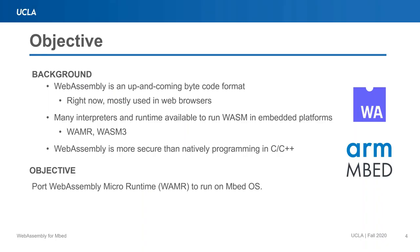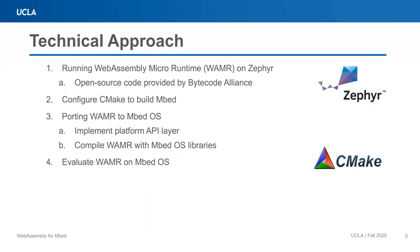For our objective, we are working towards porting WebAssembly Micro Runtime, or WAMR, to run on EmbedOS. Other previous work has already established something similar, which includes running WAMR on Zephyr. So one of our first technical steps was to get WAMR running on Zephyr using open source code from Bytecode Alliance. This allowed us to get more familiar with both Zephyr and WAMR before our own implementation for Embed.